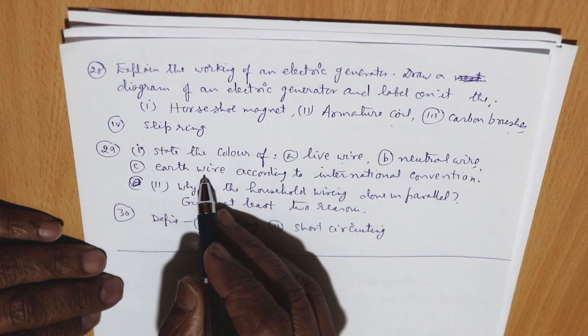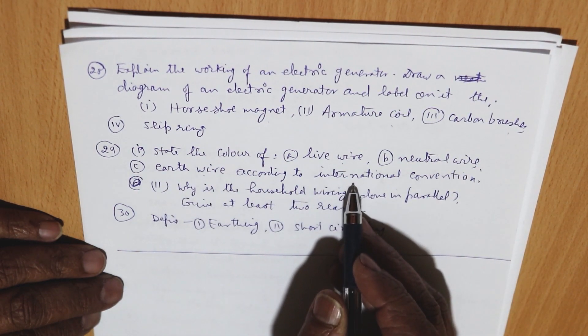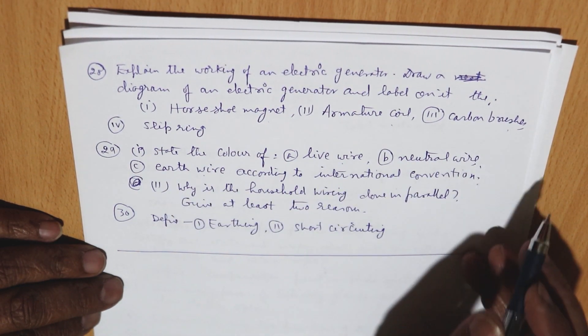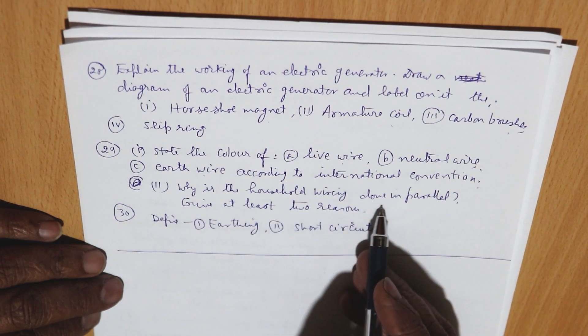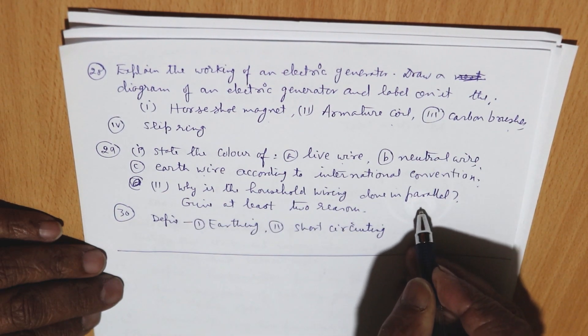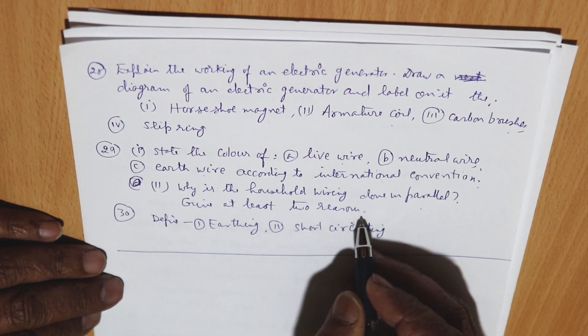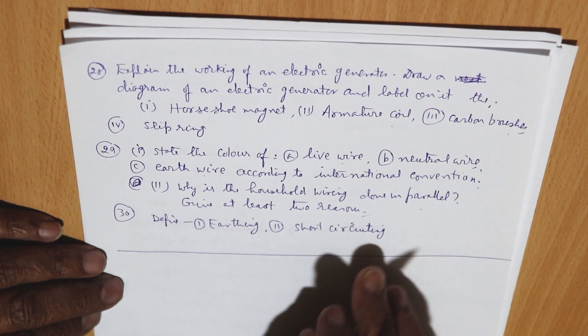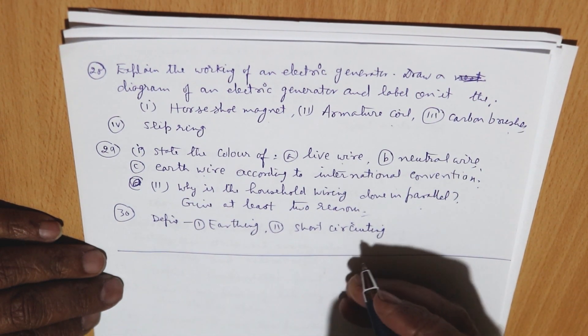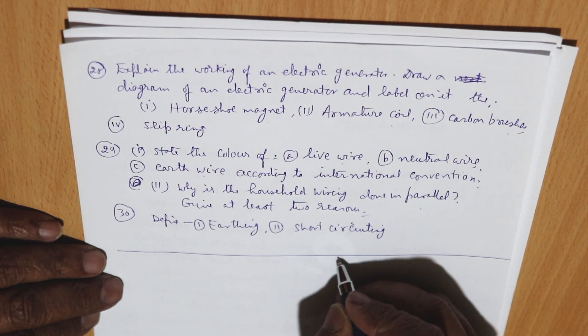Why is household wiring done in parallel — give at least two reasons. Define earthing and also short-circuiting. Up to this much in Physics, these are the sample questions.